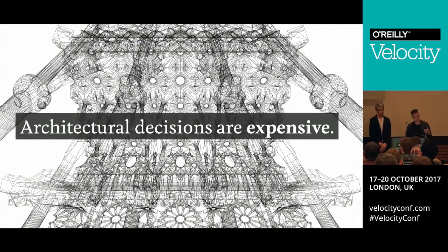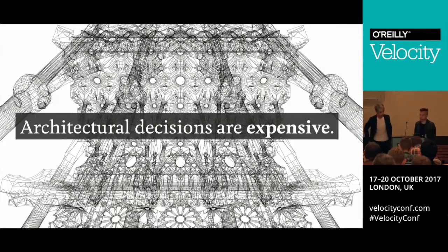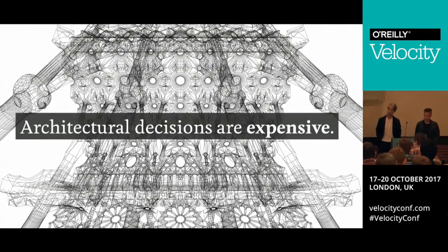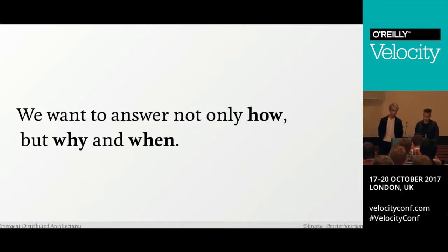Architectural decisions happen rarely, the outcomes are difficult to interpret and difficult to attribute to any of their potential causes. We often focus too much on the how — how to install Hadoop, how to set up Kubernetes. As engineers we love these questions. We focus too little on why and when: why should we build a click tracking pipeline, when should we migrate our monolith to microservices? We often avoid these questions because they're ambiguous, nuanced, and can even be political.